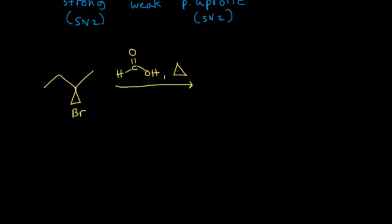We need to classify our nucleophile. Formic acid can function as a nucleophile because of the lone pairs of electrons on its oxygen, but it doesn't have a full negative formal charge, so it's a weak nucleophile. A weak nucleophile makes me think of SN1 right away — it's a possible clue that it could be an SN1 reaction.